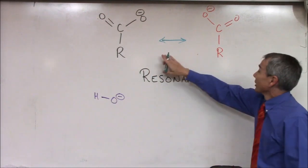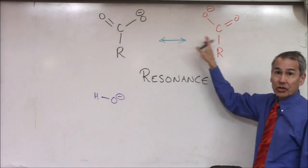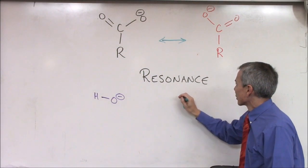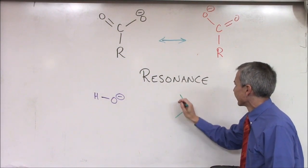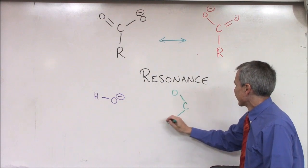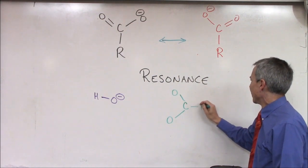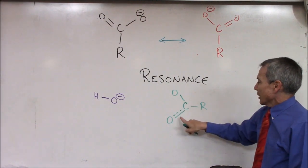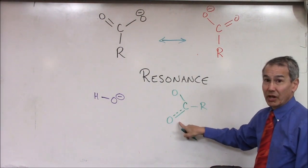Since the double bond can be in two places and the negative charge can be in two places, I sometimes see resonance structures drawn this way. I'll put R here for rest of molecule. This is sometimes a double bond, sometimes a single bond.